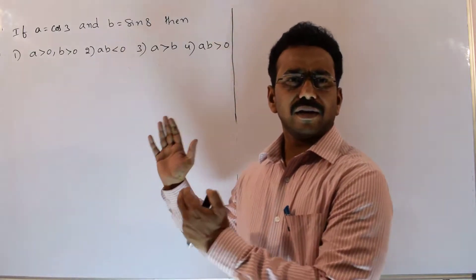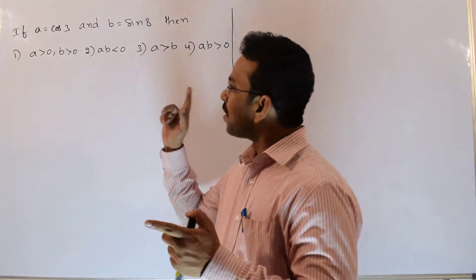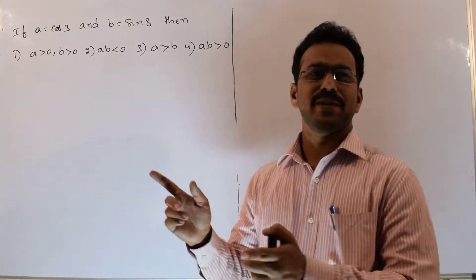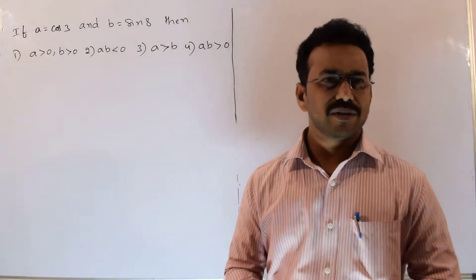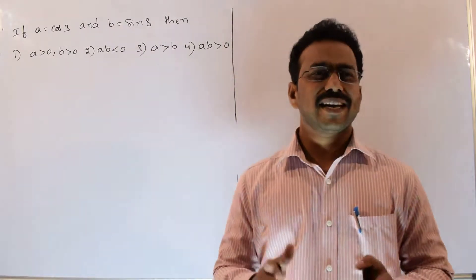Once after observing these options clearly we can conclude one point. What is the point? Here A, B depends on the signs. If you know the signs automatically you can decide which option is correct.